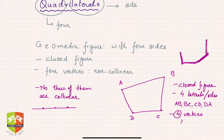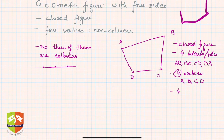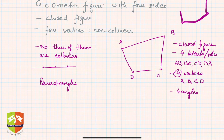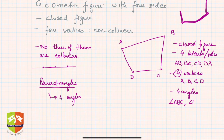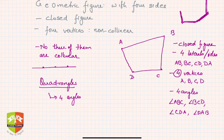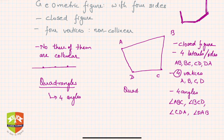There are four vertices: A, B, C, and D. There are four angles as well. Many times a quadrilateral is also called a quadrangle — just like triangles — meaning four angles. The four angles are angle ABC, angle BCD, angle CDA, and angle DAB. So four angles, four sides, and four vertices — hence the figure is called a quadrilateral.